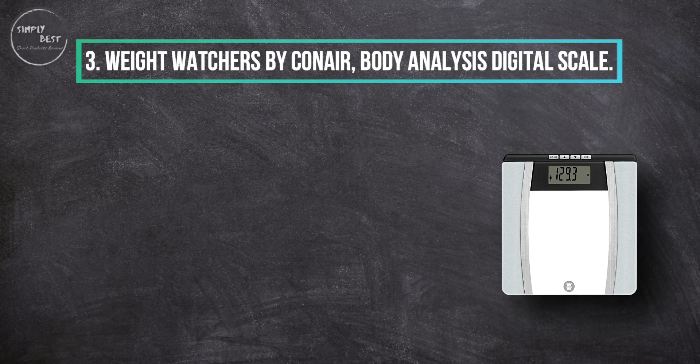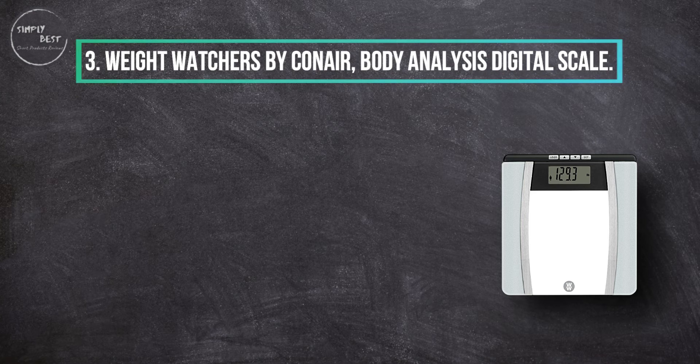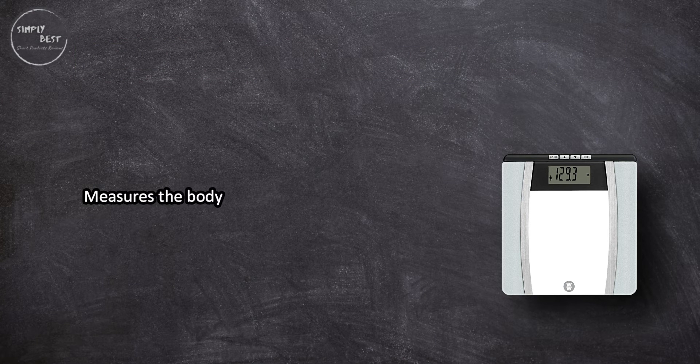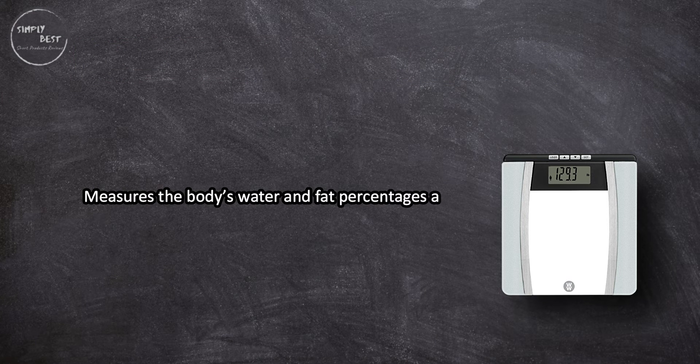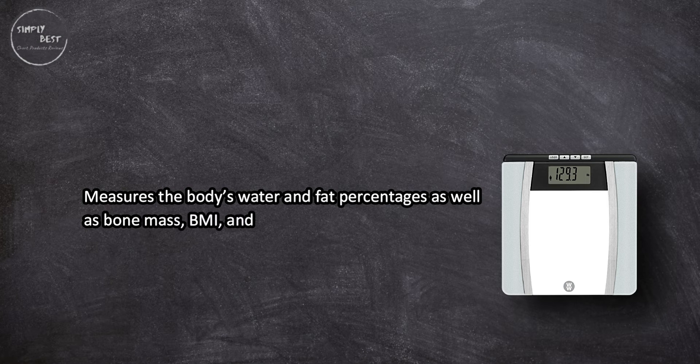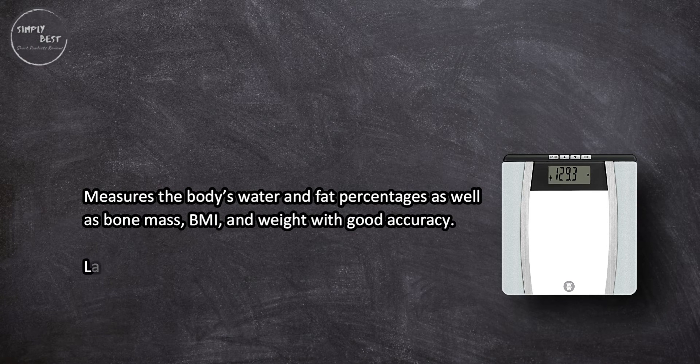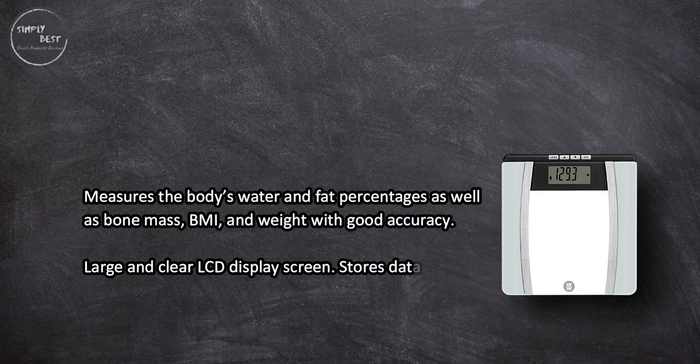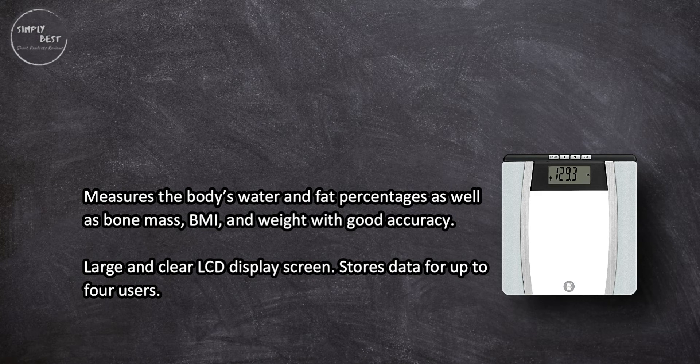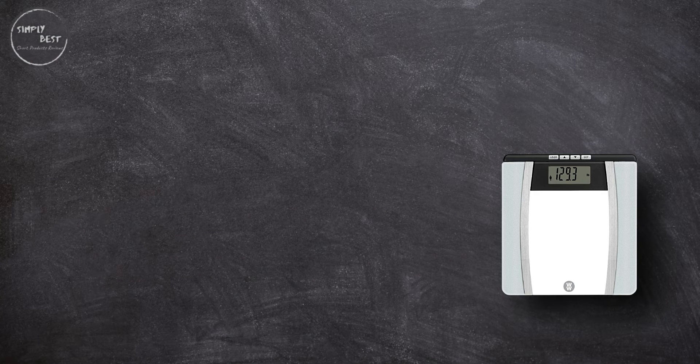Weight Watchers by Conair body analysis digital scale measures the body's water and fat percentages as well as bone mass, BMI, and weight with good accuracy. Large and clear LCD display screen stores data for up to four users.